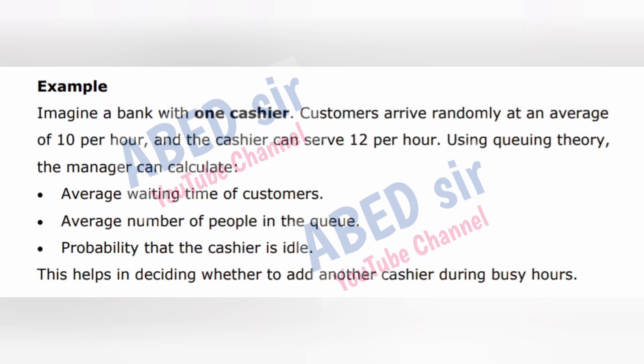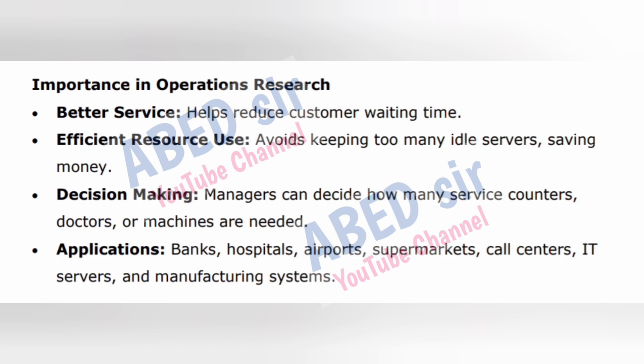Example: Imagine a bank with one cashier. Customers arrive randomly at an average of 10 per hour and the cashier can serve 12 per hour. Using queuing theory, the manager can calculate: average waiting time of customers, average number of people in the queue, and probability that the cashier is idle. This helps in deciding whether to add another cashier during busy hours. Importance in operations research: Better service helps reduce customer waiting time. Efficient resource use — avoids keeping too many idle servers, saving money. Decision making — managers can decide how many service counters, doctors, or machines are needed.